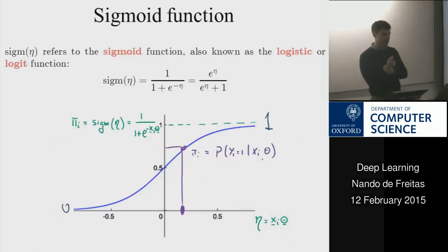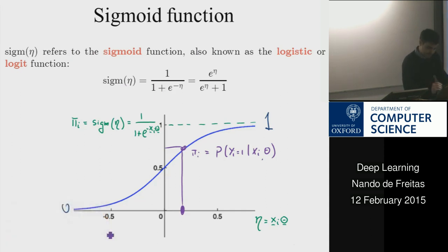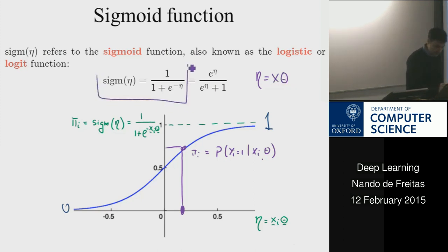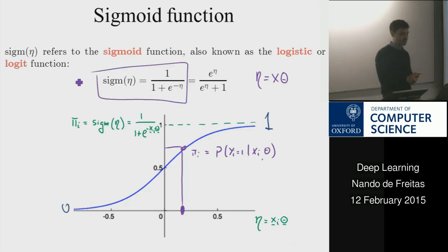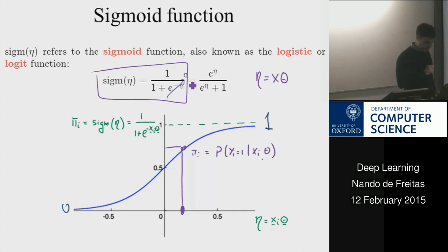The squashing function takes as input the output of the linear regression layer, which is xᵢθ. So η = xθ is the input. The sigmoid function has the form 1 / (1 + e^(−η)). As η goes to infinity, this function goes to 1. And when η becomes very large and negative, this function goes to 0. So it's between 0 and 1.